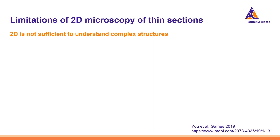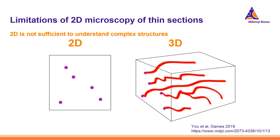Before diving into the topic of 3D imaging, let's try to understand why 2D microscopy is not enough for your samples. When we section a sample and image, the image fails to accurately represent the true structure. Looking at an illustration showing blood vessels in a cross section, on the left we have a 2D image that provides very minimal information, while on the right we have the preferred 3D image that accurately reveals the actual blood vessels.